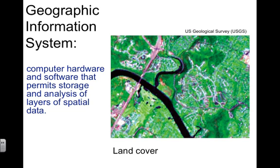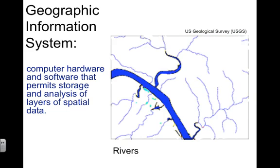Look at the image to the right showing land cover — vegetation, trees, and so on. Now if I wanted to focus on where rivers were located — rivers, streams, any body of water — I can see some major ones, but seeing the smaller tributaries is much more difficult. So go to another layer of data and by layering the data, you get to see less noise, less clutter.